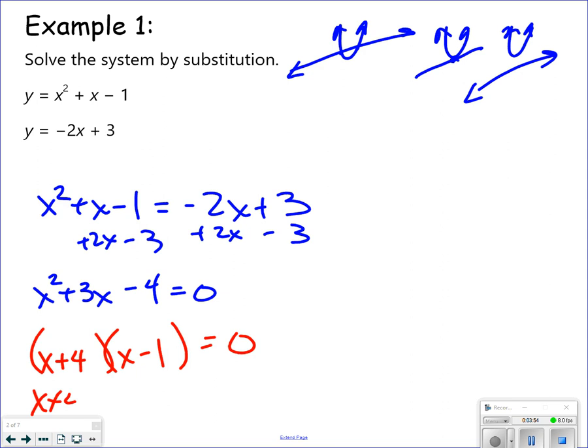Factors of negative 4 that get me 3 would be 4 and negative 1. Set the parentheses equal to 0. So I've got x plus 4 equaling 0, x minus 1 equaling 0. So I get x equals negative 4 and x equals 1.